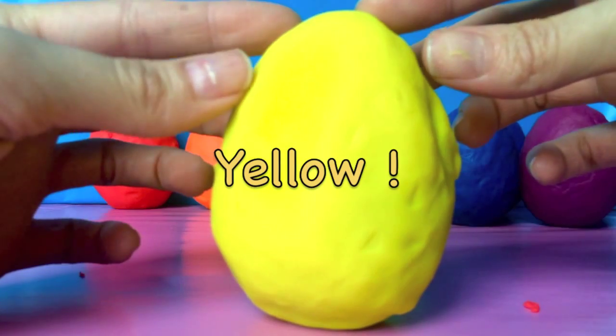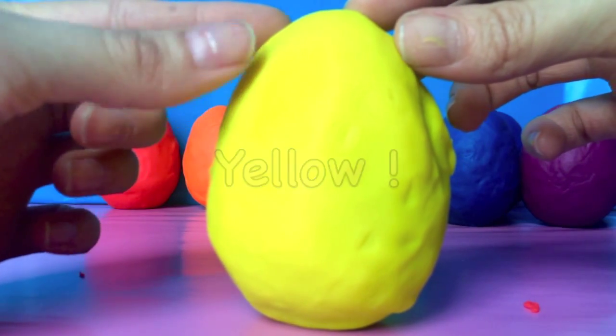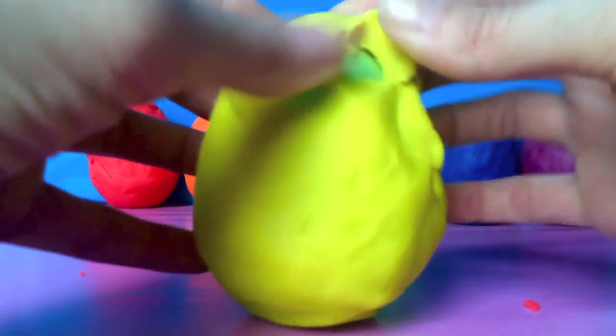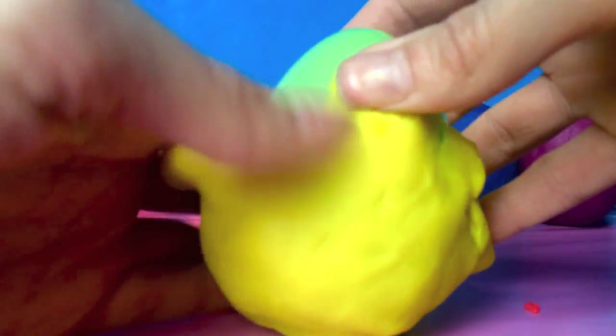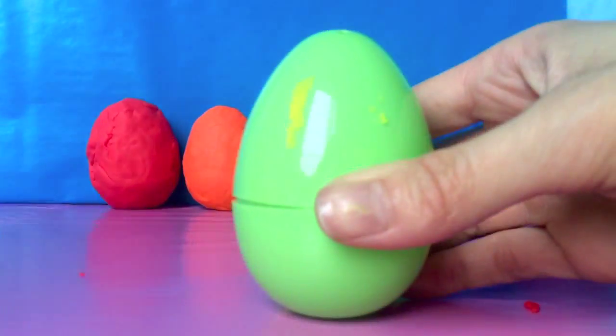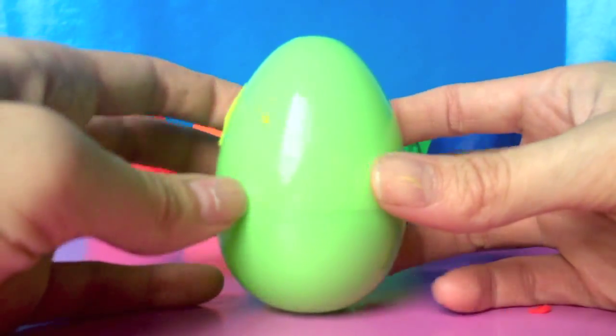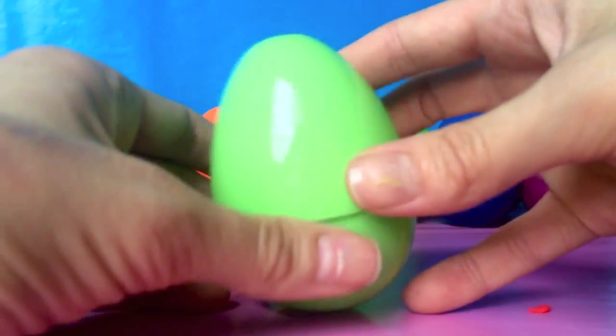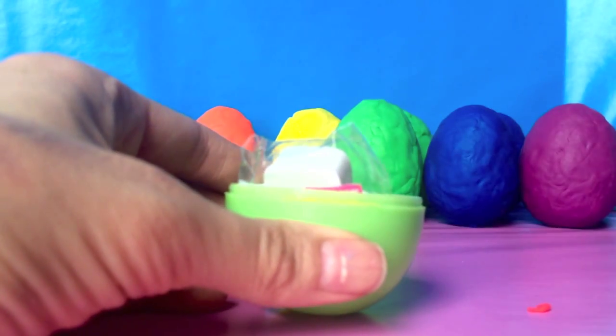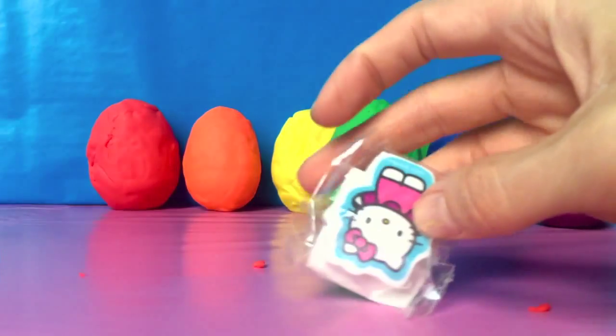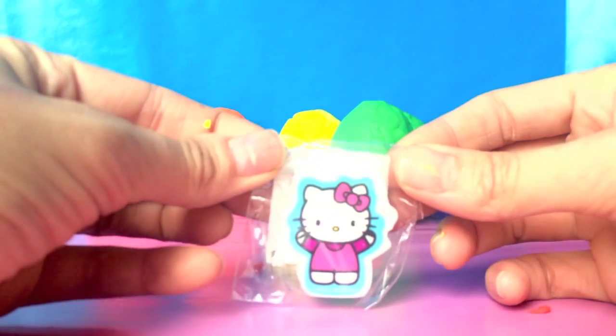It's a yellow egg. What's inside? It's a green egg. What's inside?